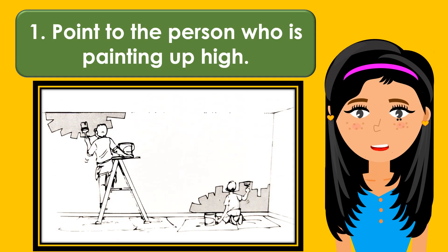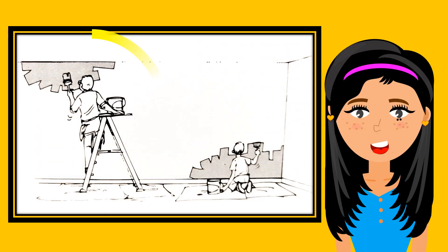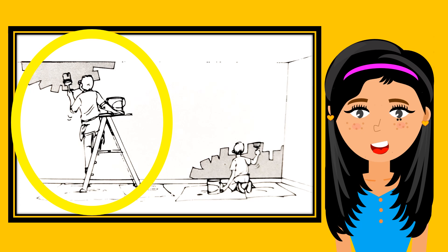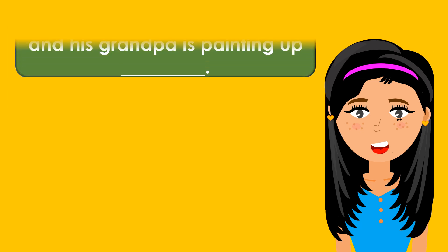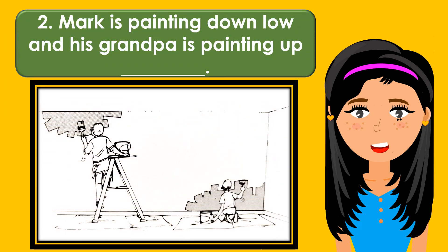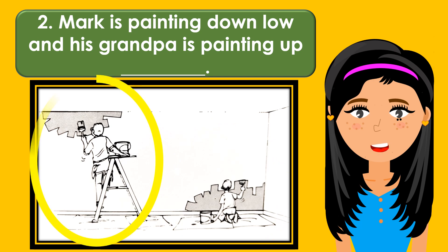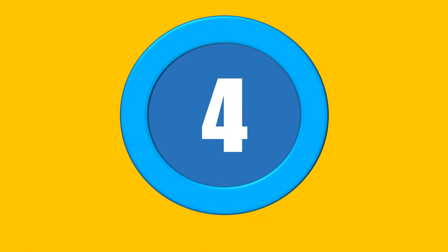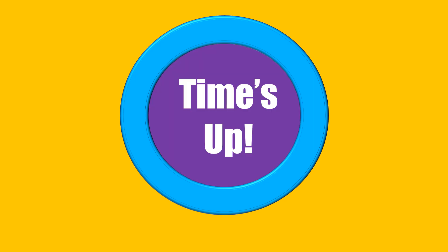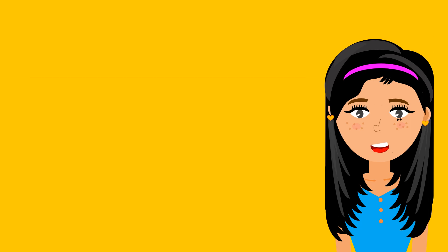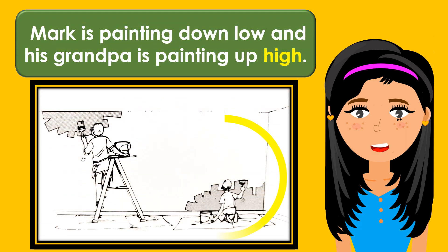Point to the person who is painting up high. Mark is painting down low, and his grandpa is painting up blank. The missing word is high. Mark is painting down low, and his grandpa is painting up high.